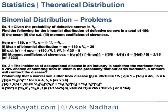Example 2: The incidence of occupational disease in an industry is such that the workmen have a 20% chance of suffering from it. What is the probability that out of 6 workmen, 4 or more will contract the disease?